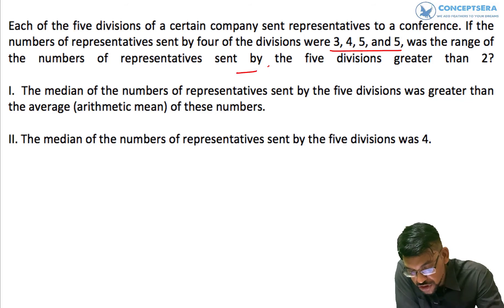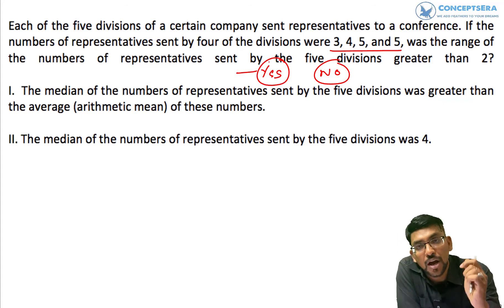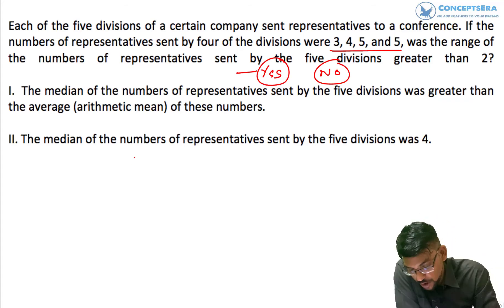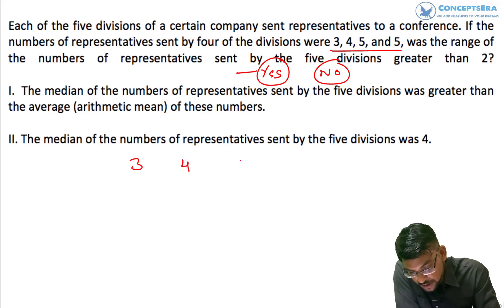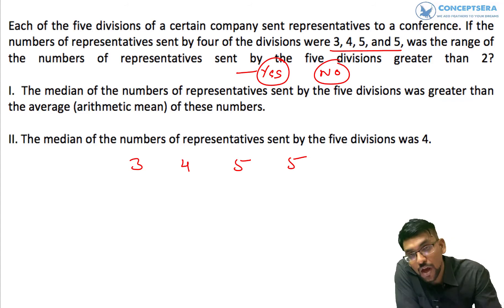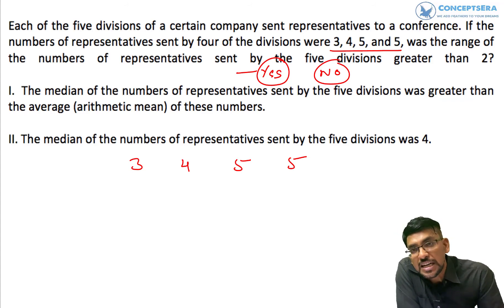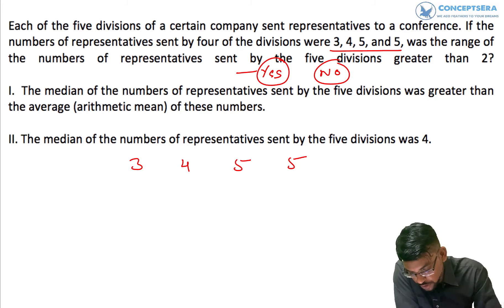This question is a yes-or-no question, so we have to uniquely determine yes or no. We know the number of representatives sent by 4 divisions are 3, 4, 5, and 5. We do not know the number sent by one particular division, so let's call that x.